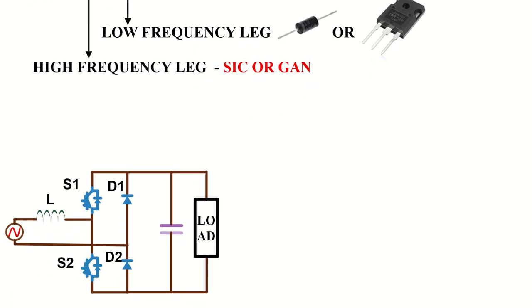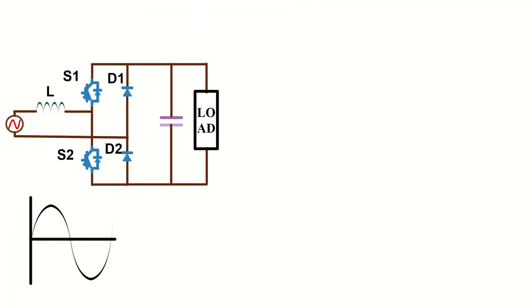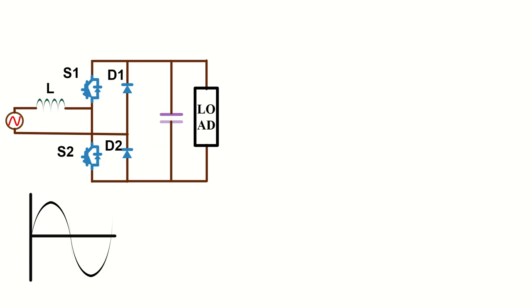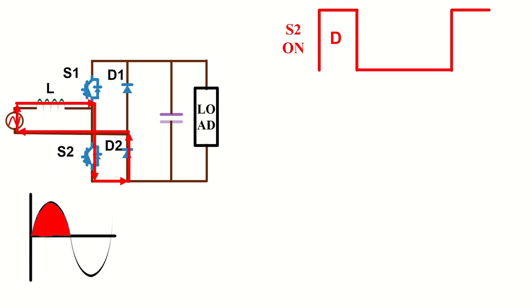The totem pole PFC operates differently in the positive and negative half cycles of the AC mains input. During the positive half cycle, the device S2 is turned on with a duty cycle D. This will charge the inductor through device S2 and diode D2.